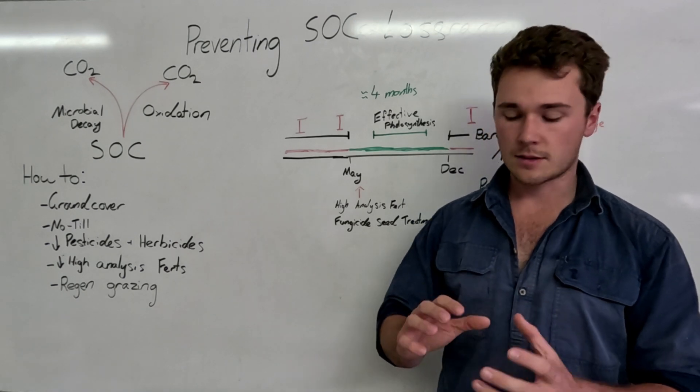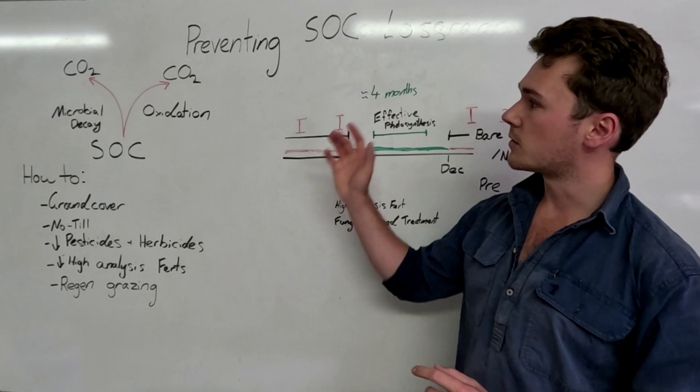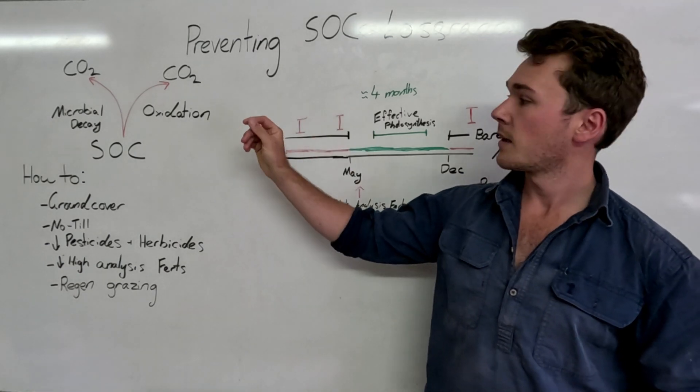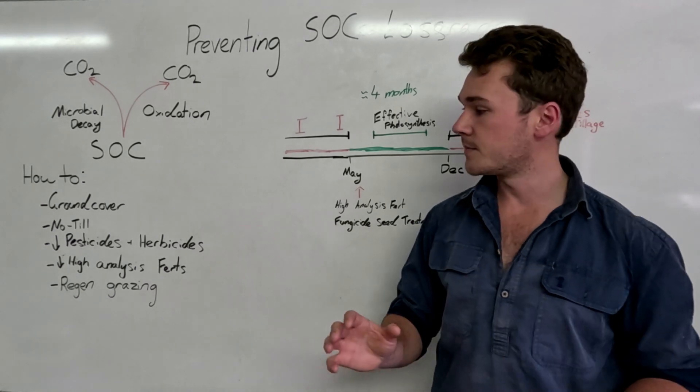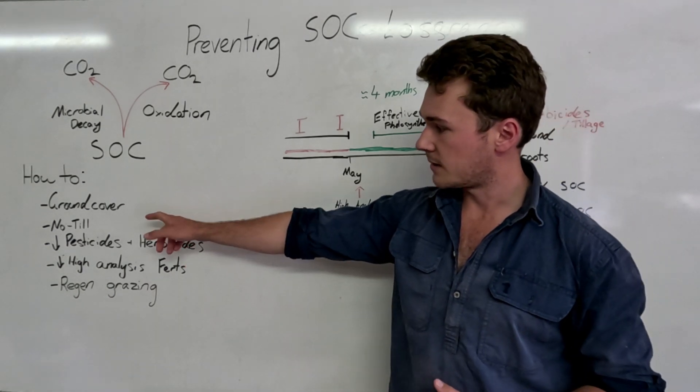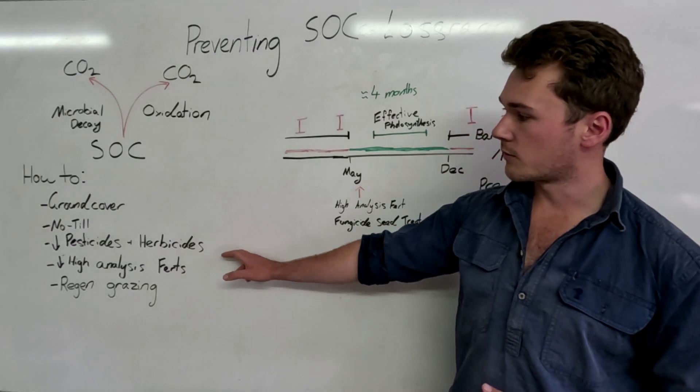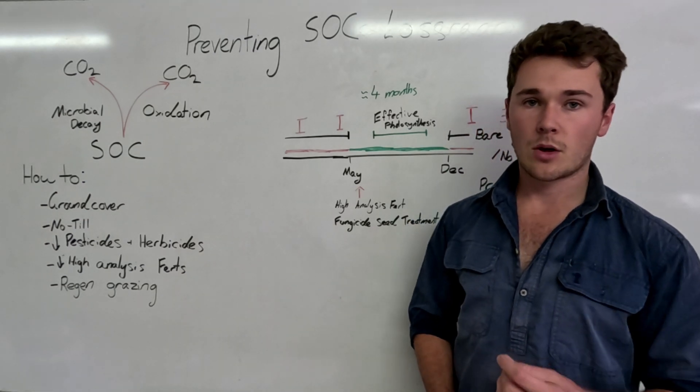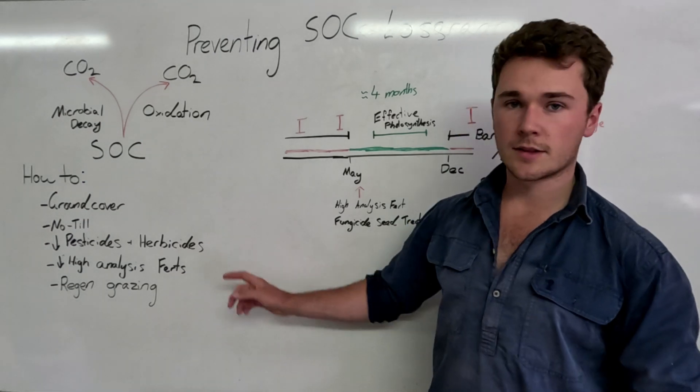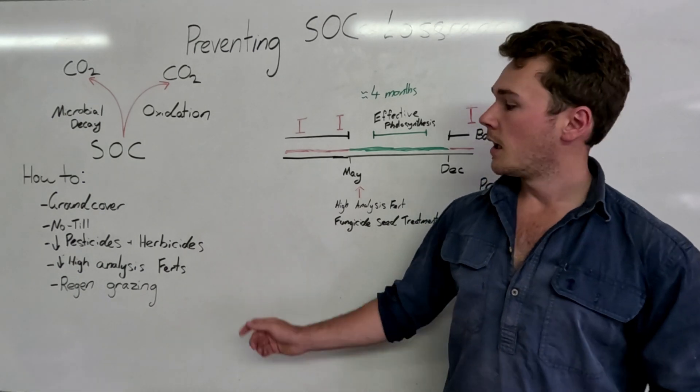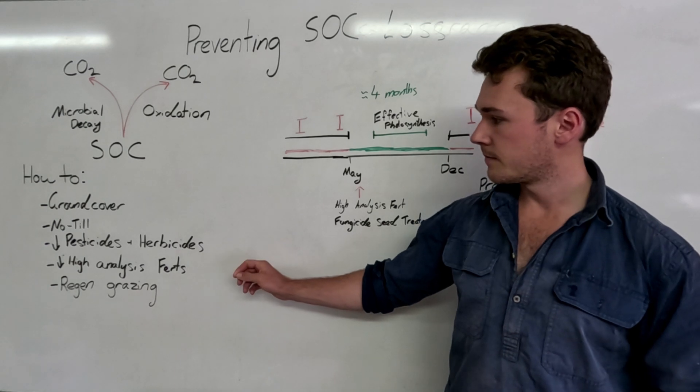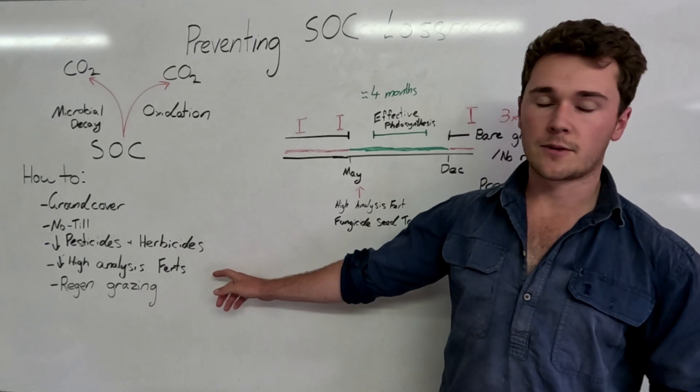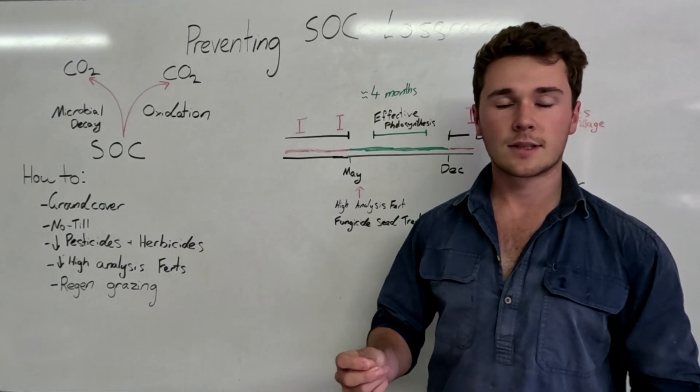We're going to go no-till. The problem with tillage is that it inverts the soil and aerates it, breaks up your soil aggregates exposing your soil organic carbon to UV light, allowing it to oxidize, and we don't want that. So we want to protect our soil and the soil organic carbon by practicing no-till. We want to reduce pesticides and herbicides, so these actually oxidize the soil organic carbon as well as destroy a lot of the beneficial microbes.